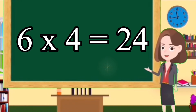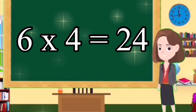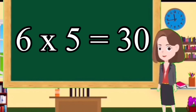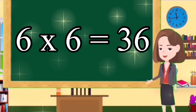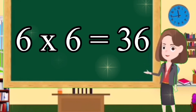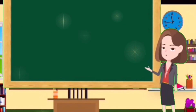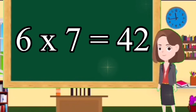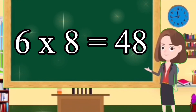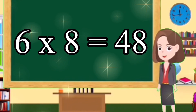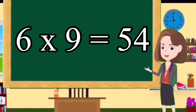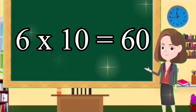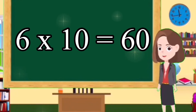Six fours are twenty-four. Six fives are thirty. Six sixes are thirty-six. Six sevens are forty-two. Six eights are forty-eight. Six nines are fifty-four. Six tens are sixty.